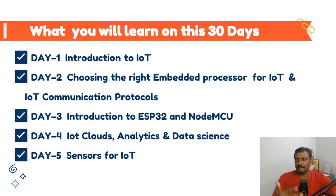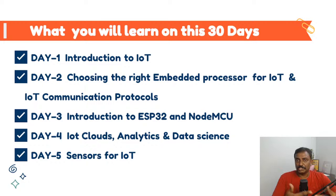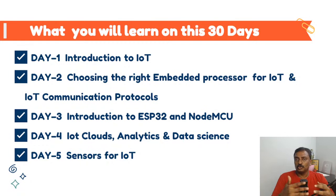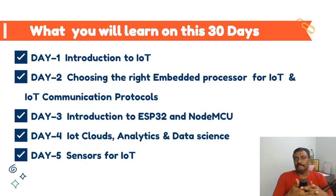Day Two covers how to choose the right embedded processor for IoT, and the different types of IoT communication protocols. There are a lot of processors in the market — microprocessors, DSP processors, and FPGAs — so Day Two will help you choose which processor to use when designing an IoT product. Day Three covers the architecture of ESP32 and NodeMCU, including peripherals.